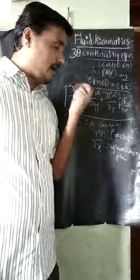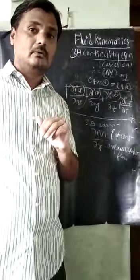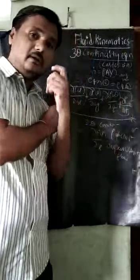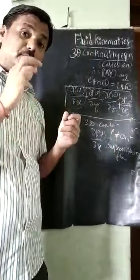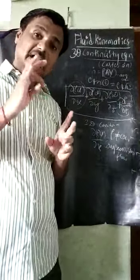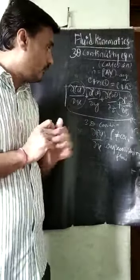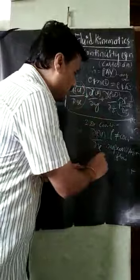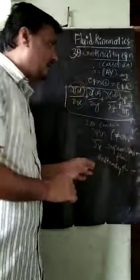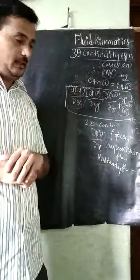The parameter density is also varying with respect to time. Time is taken in this equation. With respect to time, if any parameter is changing, then that kind of fluid flow is called unsteady fluid flow. So this equation is also for unsteady flow — the parameter density is varying with respect to time.